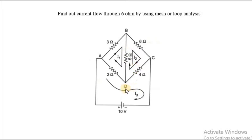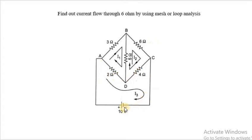Loop 3 starts from A to D, D to C, and C to A through the 10 volt battery. So loop number 3 consists of 2 ohm, 4 ohm and the 10 volt battery, and this loop 3 carries loop current I3, also in the clockwise direction.